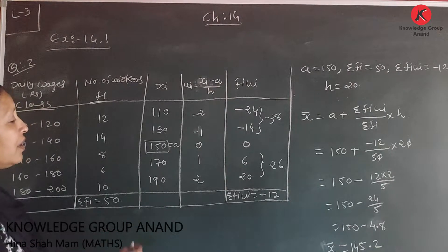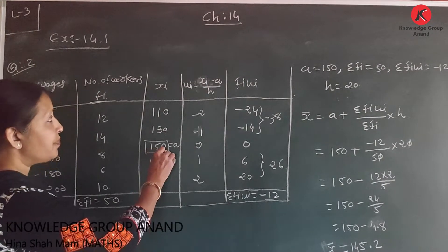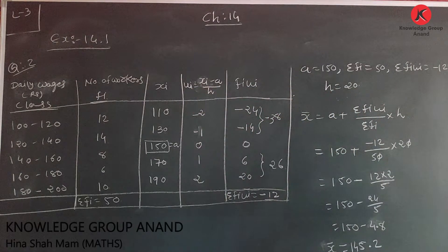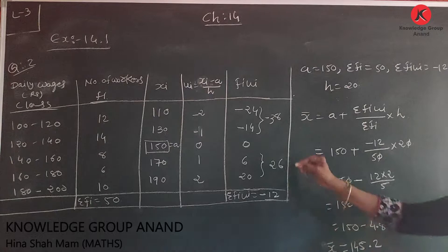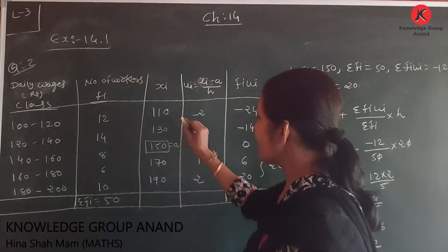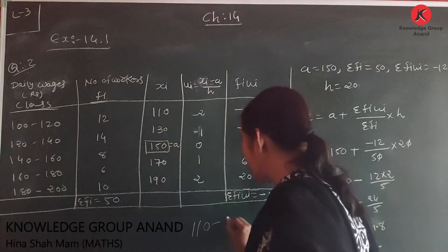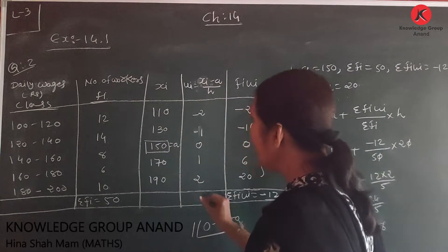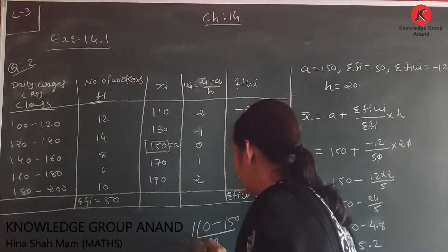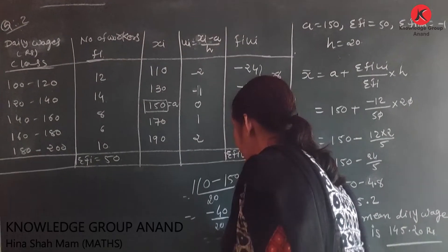We choose a = 150 (the middle xi value). Now find ui = (xi - a) / h. For xi = 110: (110 - 150) / 20 = -40/20 = -2. So the ui values are: -2, -1, 0, 1, 2 (and 3 for the last interval).